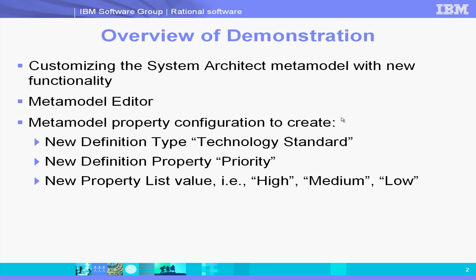For this demonstration, I'll use the Meta Model Editor, which is a user interface editor for editing and extending the Meta Model in System Architect. I'll show how to do Meta Model property configurations to create a new definition type of type Technology Standard, and a new definition property of type Priority. The Priority will have a property list value of high, medium, and low.